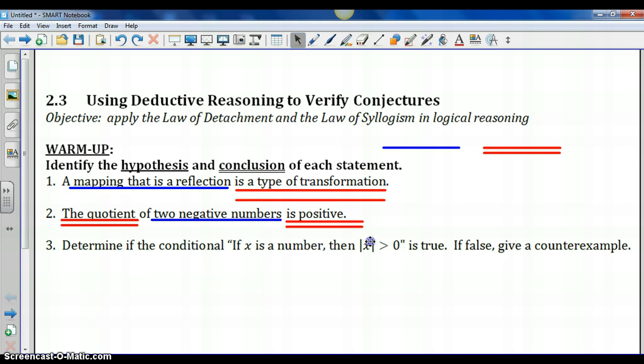Lastly, number three, we need to determine the truth value of this conditional statement. If it's false, we need to give a counterexample. If x is a number, is the hypothesis. That means x could represent any number. Then the absolute value of x is greater than zero. Greater than zero means positive only. Well, I can think of one number that would make this false. If x equals zero, zero is a number. The absolute value of x is not a number that is greater than zero. It is equal to zero. So this is our one counterexample, so this is false.